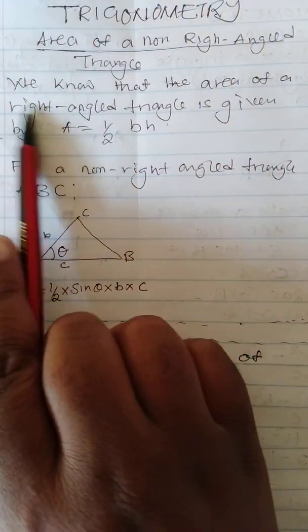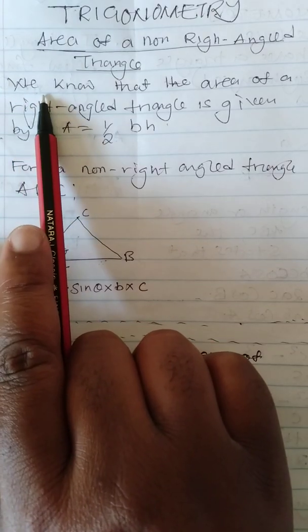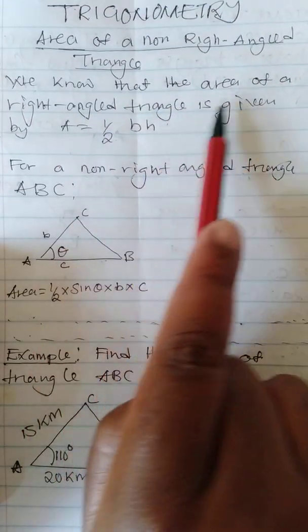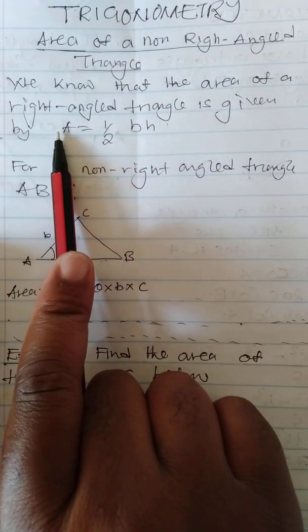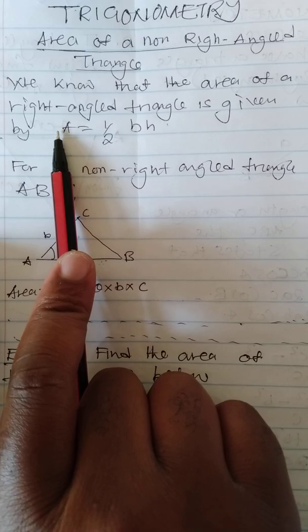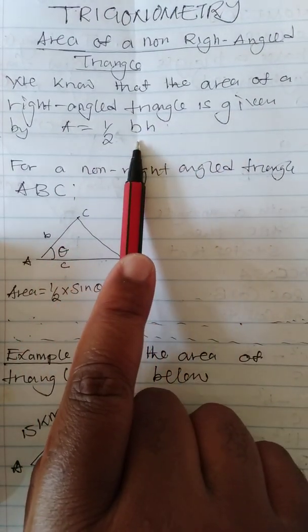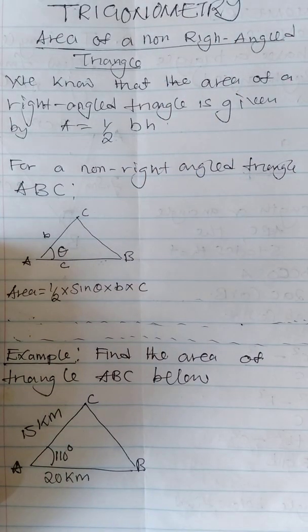Now, it is common knowledge that the area of a right-angled triangle is given by this formula we have been using from primary school. Area is equal to half bh, where this is the base of a triangle.